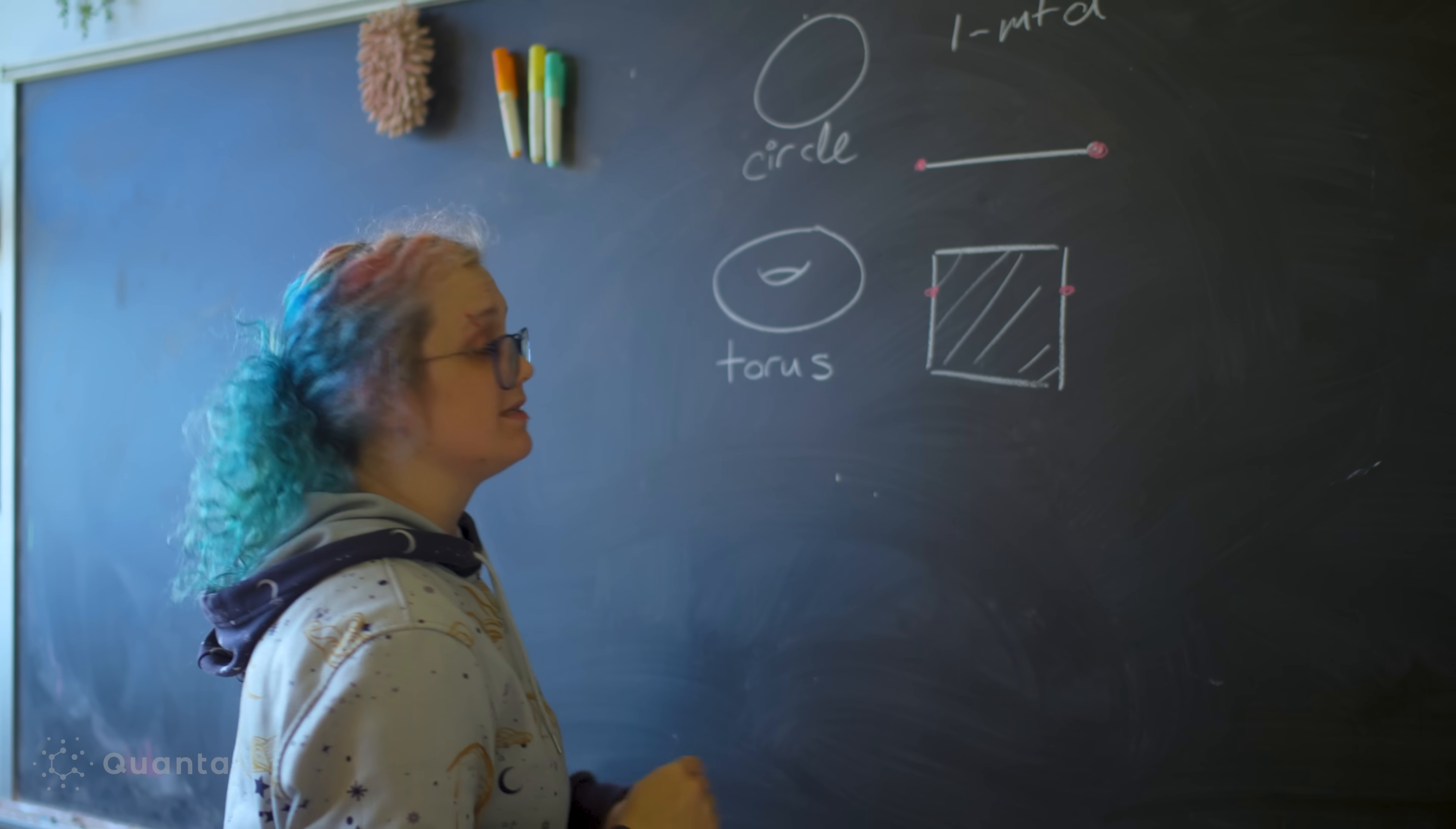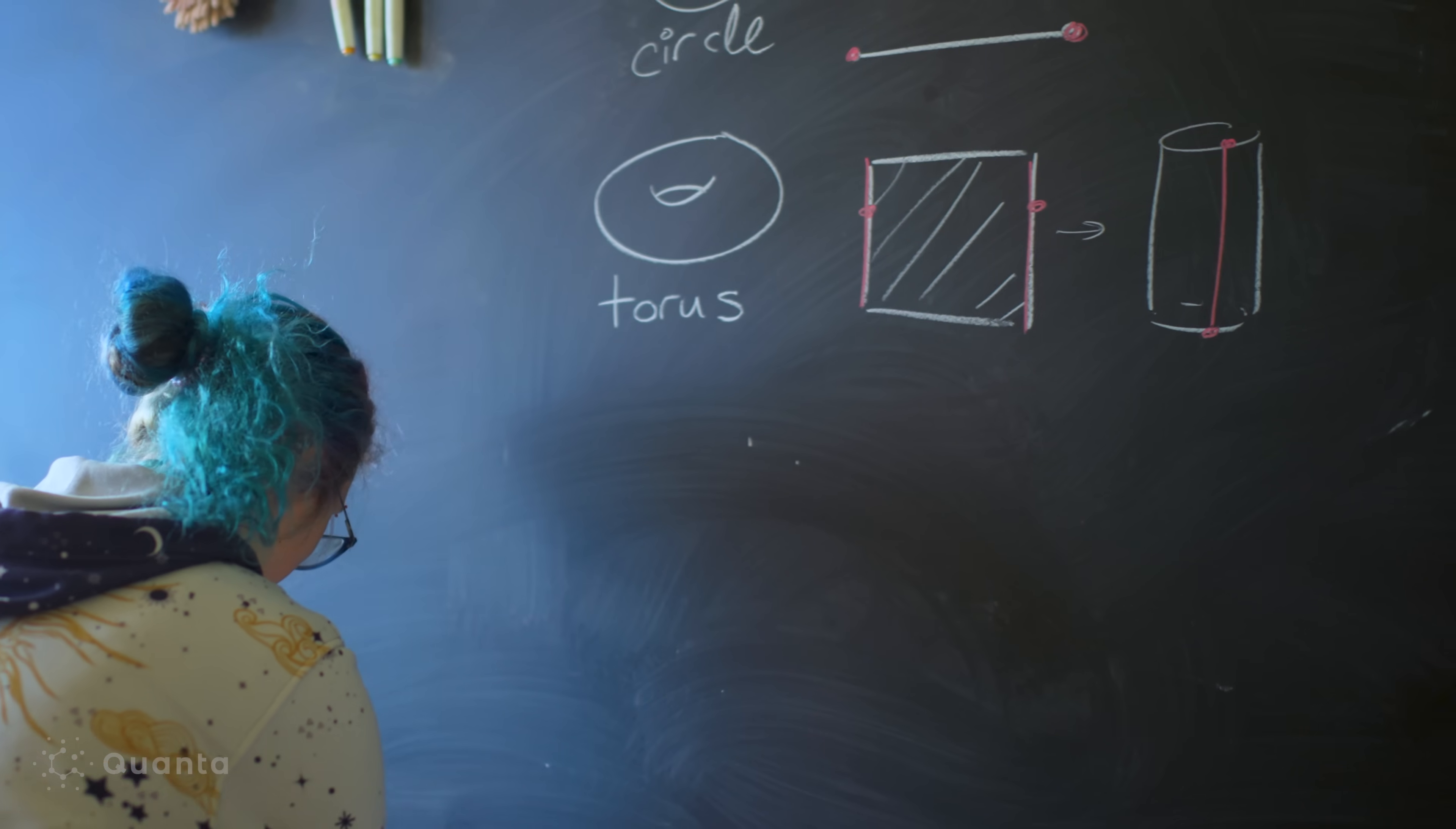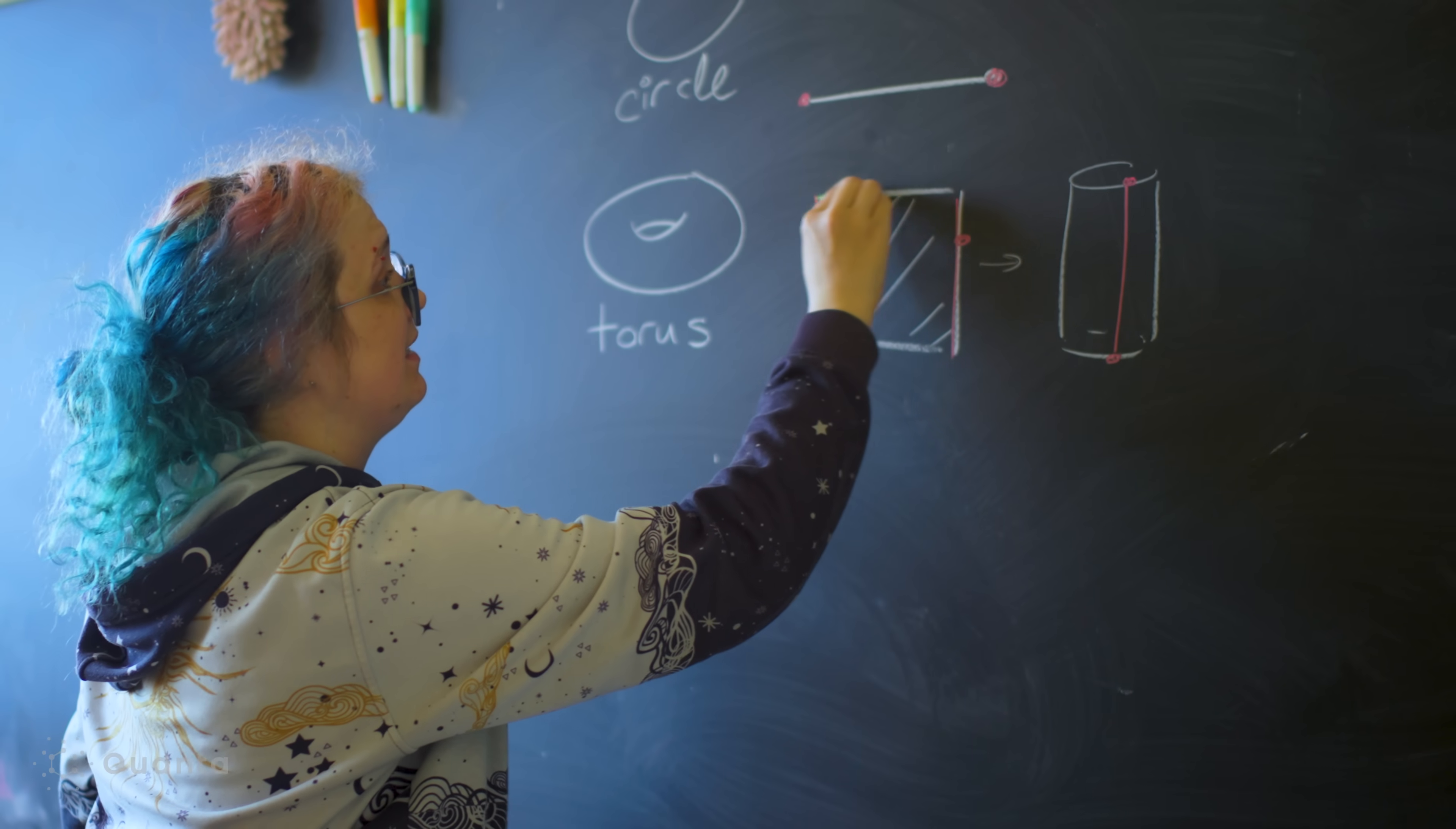So even though these two points look like they are different points, I'm going to declare that now these are the same point. So imagine taking a piece of paper and gluing the whole left edge to the whole right edge, and if you did that, you would get a tube. Well, that takes care of some of the boundary, but the square has more edges than the line segment did.